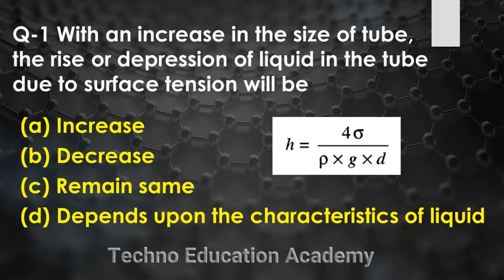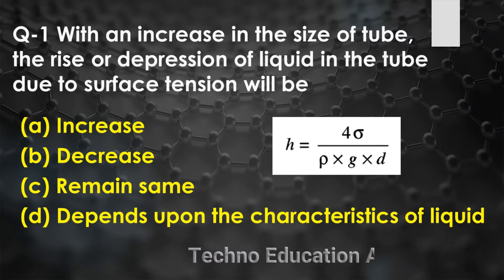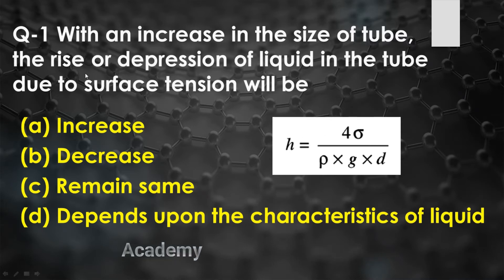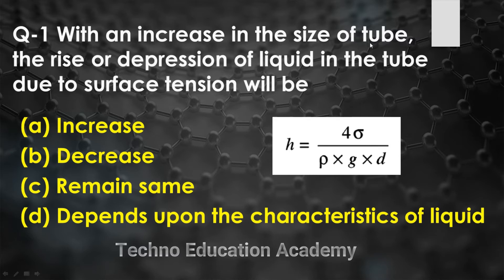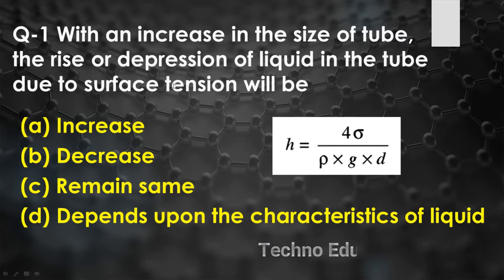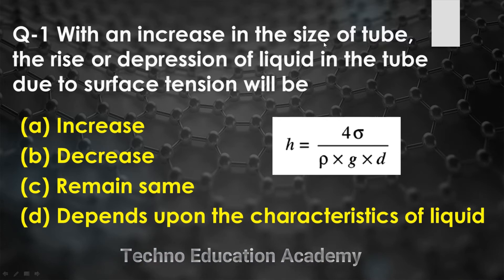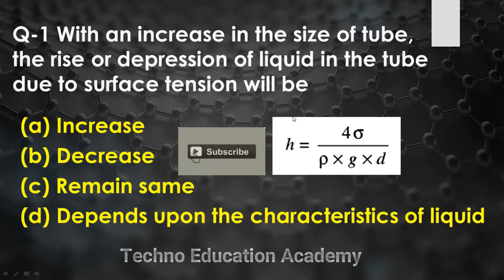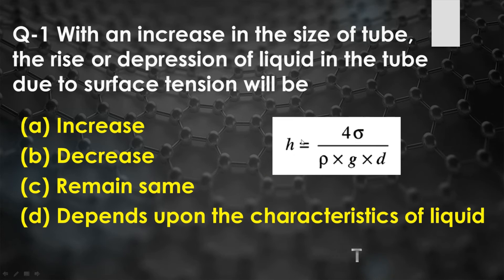We know that the rise and fall of liquid h = 4σ / (ρgd), where σ is surface tension, ρ is density of fluid, g is gravitational acceleration, and d is diameter of tube. When we increase the size (diameter) of the tube, h is inversely proportional to diameter. So increasing diameter decreases the rise or depression. The right answer is option B.